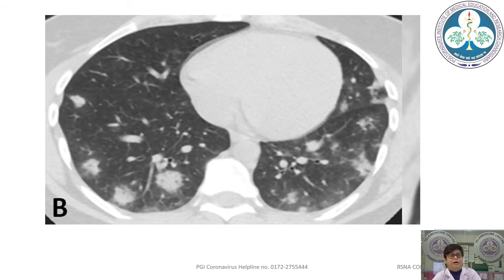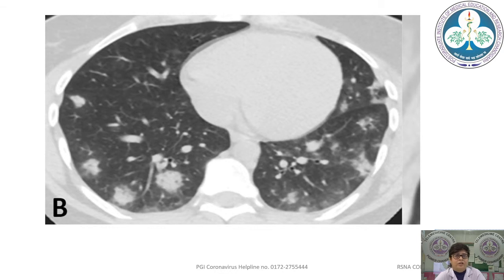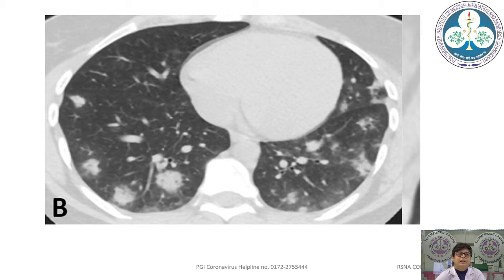Another example from the literature showed roundish consolidated nodules with peripheral ground-glass halos — in any other setting, a radiologist would diagnose fungal pneumonia, but this was actually COVID-19. It is very difficult not only to diagnose COVID-19 based on imaging, but even if a patient has COVID-19, it is hard to differentiate it from comorbid chest illnesses like fungal infection, tuberculosis, or aspiration — all of which may show similar nodular features. These details will be discussed further in the next talk.